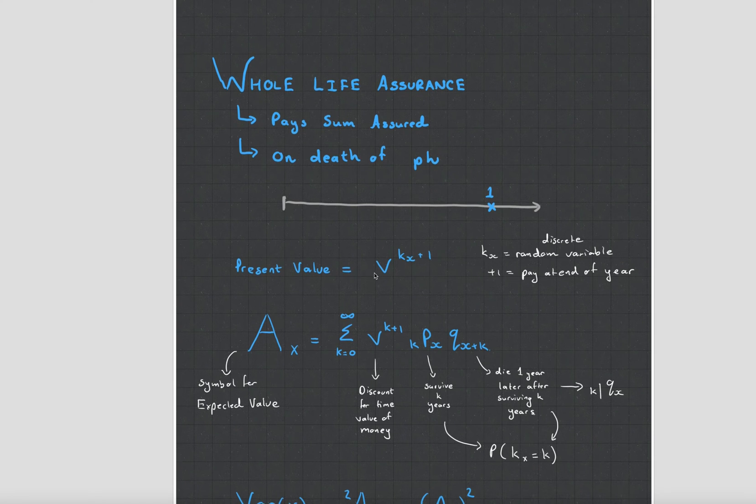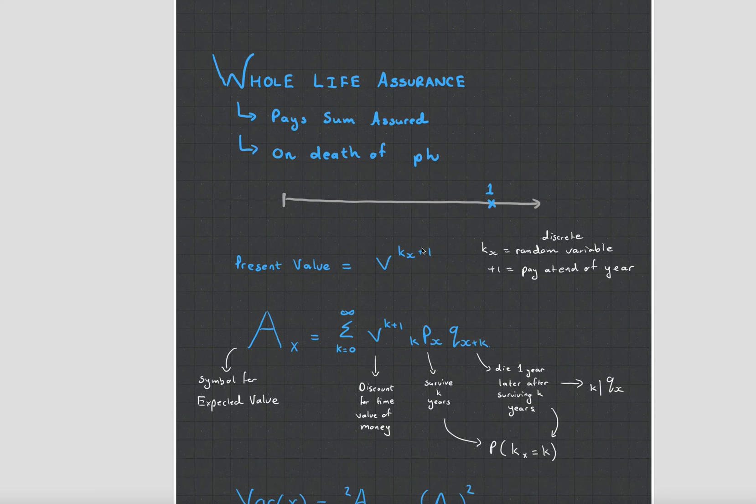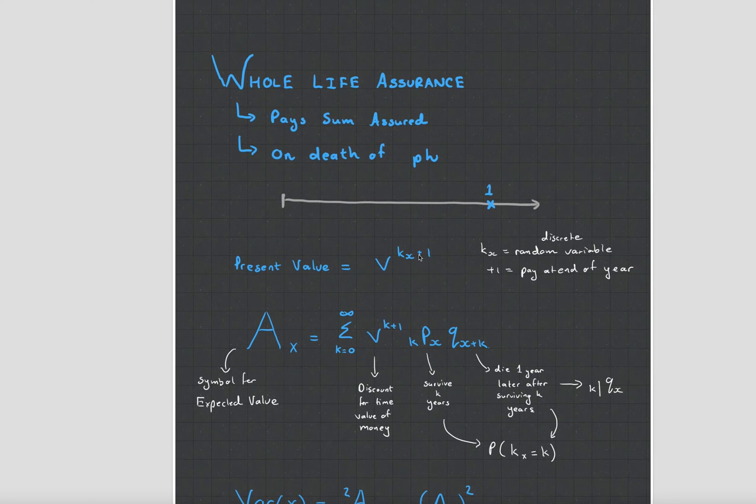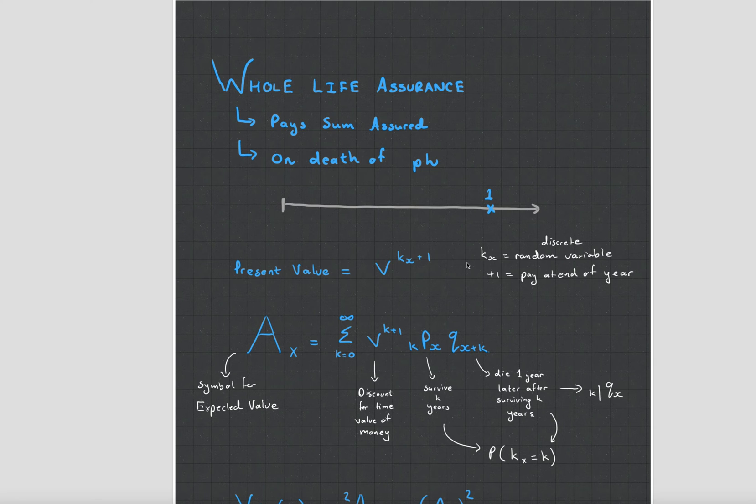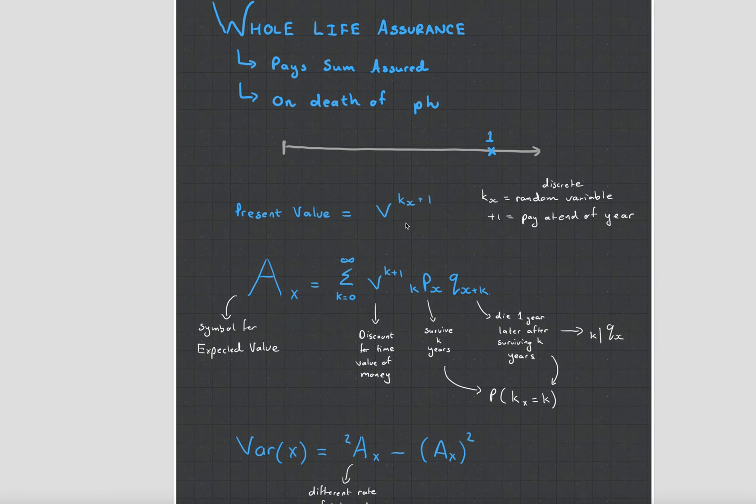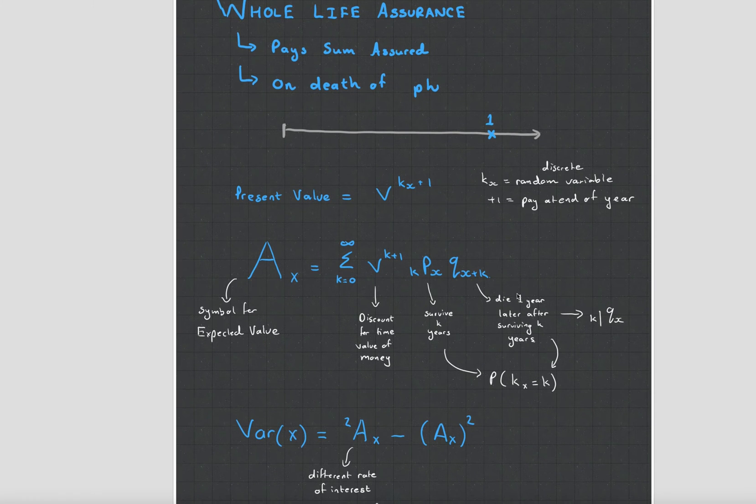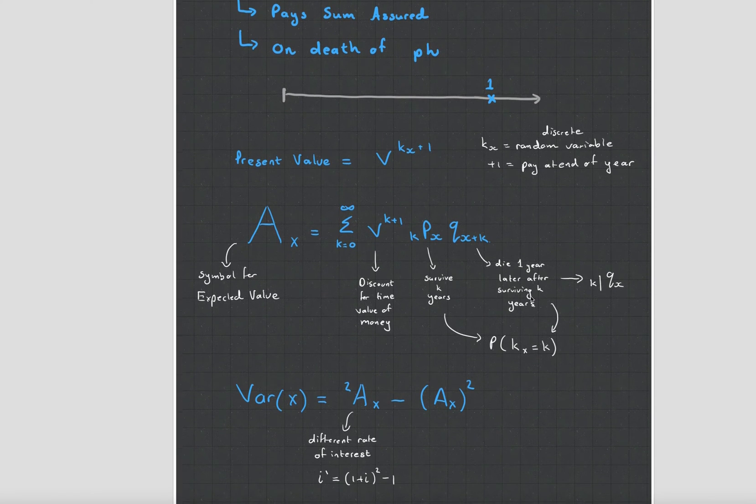So the present value would just be the discount value of the expected life of the person plus one because this is the simple case with discrete where payments are made at the end of year of death. The symbol for the expected value of this value here is known as AX and it is simply the summation of all the instances where the person survives a little period then dies plus that they survive a little period then dies plus a little period and it dies and that the survival is represented by KPX and the death is then QX plus K for the age. Feel free to pause and read my little notes in the white.